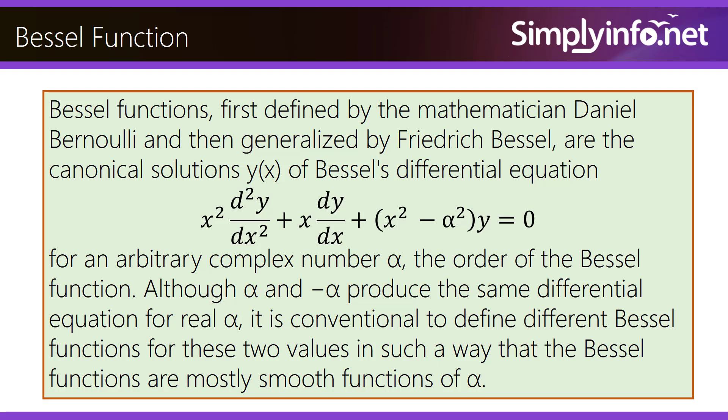For an arbitrary complex number alpha, the order of the Bessel Function, although alpha and negative alpha produce the same differential equation for real alpha, it is conventional to define different Bessel Functions for these two values in such a way that the Bessel Functions are mostly smooth functions of alpha.